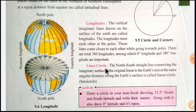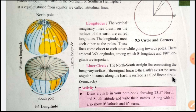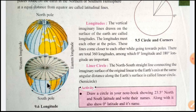Next is the Meridian Circle. The North-South straight line connecting the imaginary surface to the Earth's axis at the same angular distance along the Earth's surface is called a Meridian Circle. Meridian Circle means a Semi-Circle — a North-South straight line connecting to the imaginary surface at the same angular distance along the Earth's surface.